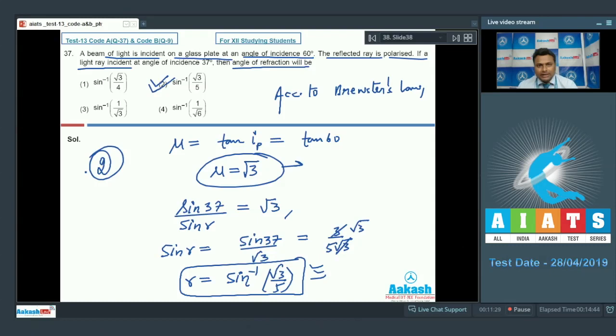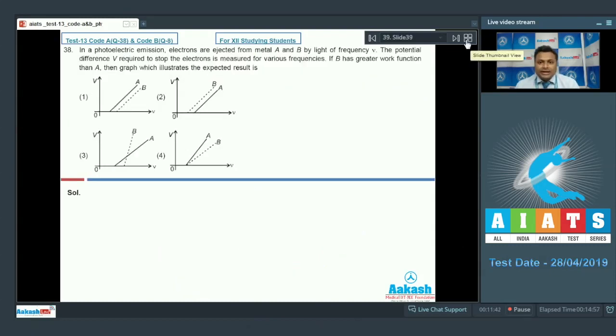Here is question number 38, everyone. In a photoelectric emission, the electrons are ejected from metal A and B by light of frequency nu. The potential difference V required to stop the electron is measured for various frequencies. If B has greater work function than A, then the graph which illustrates the expected result is what? Now we know very well the stopping potential related with the frequency as.